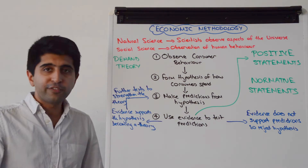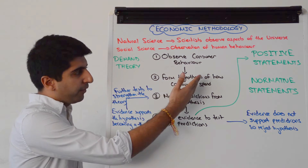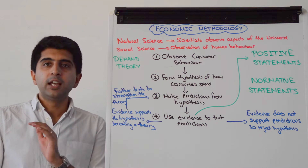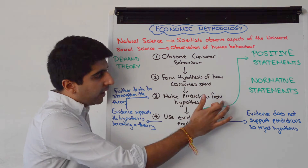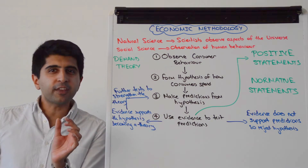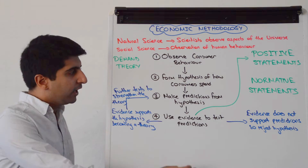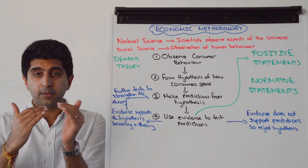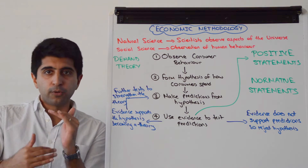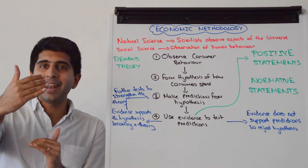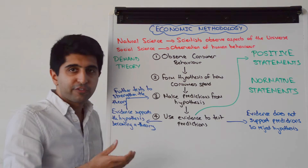From that, an economist will form a hypothesis of how consumers spend — an expectation that when prices are low, consumers spend more money. From that, an economist would form more precise predictions that can be clearly tested against evidence. So predictions could be that when prices fall, consumers spend more, whereas when prices rise, consumers spend less. These predictions can be clearly tested but they are formed from the hypothesis.